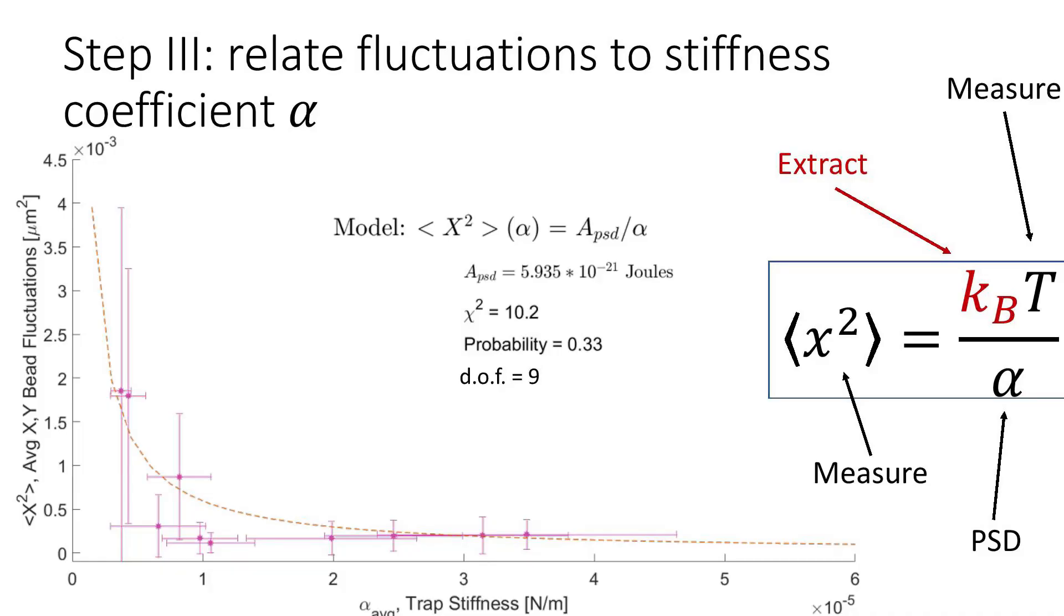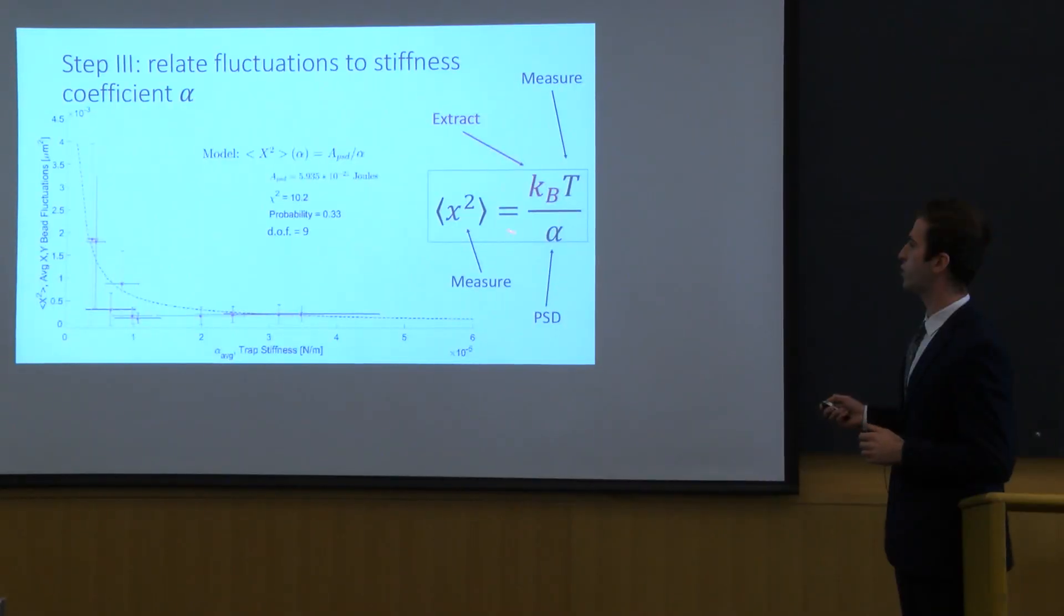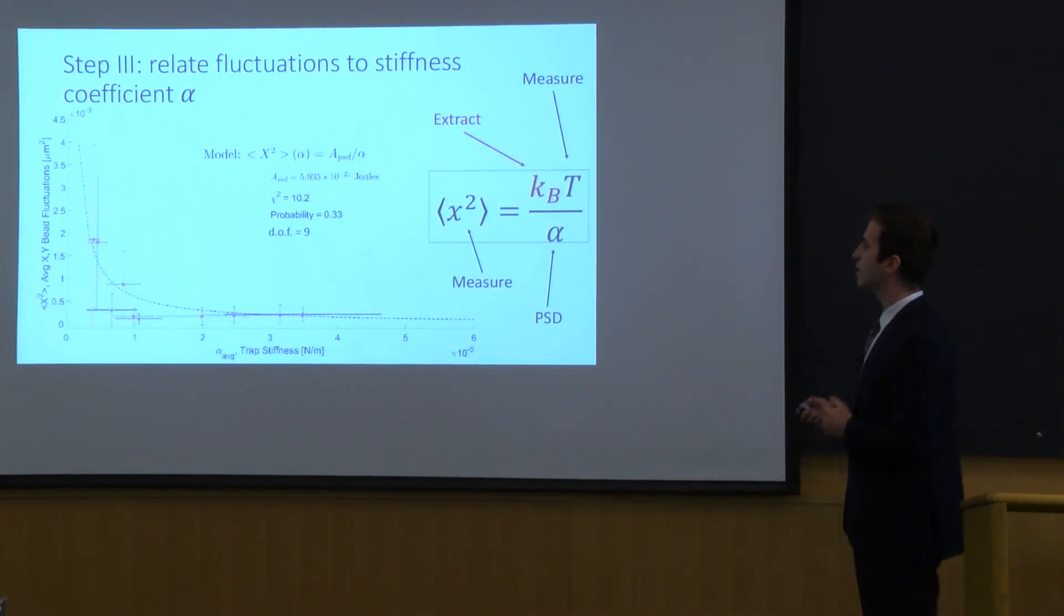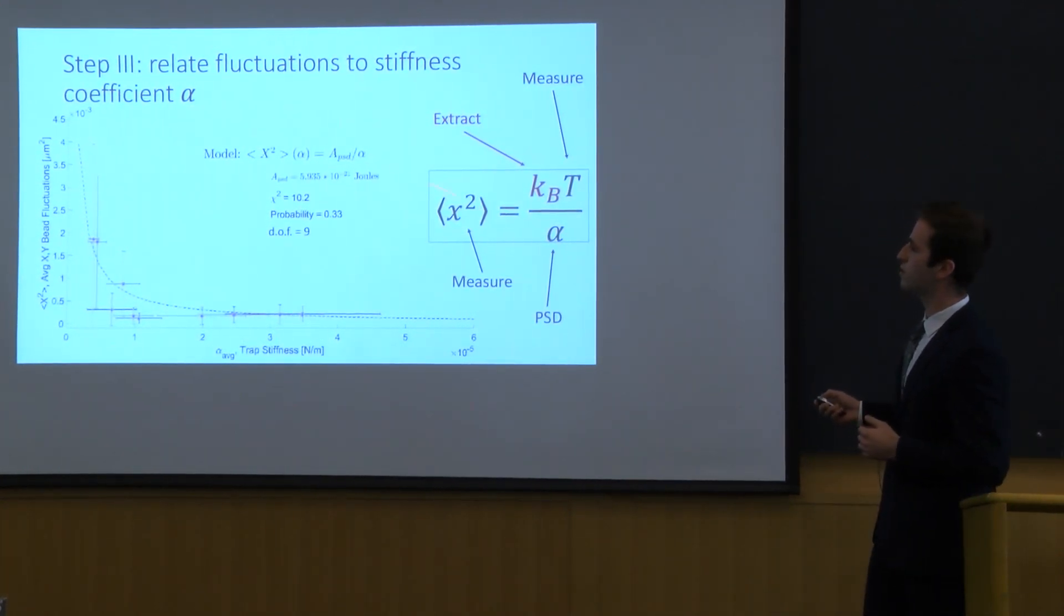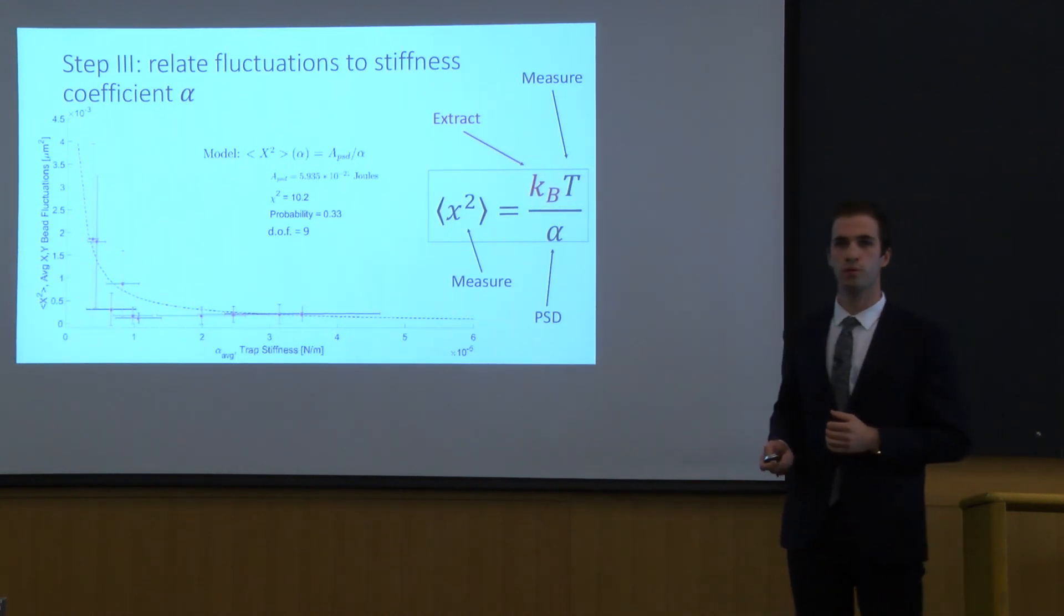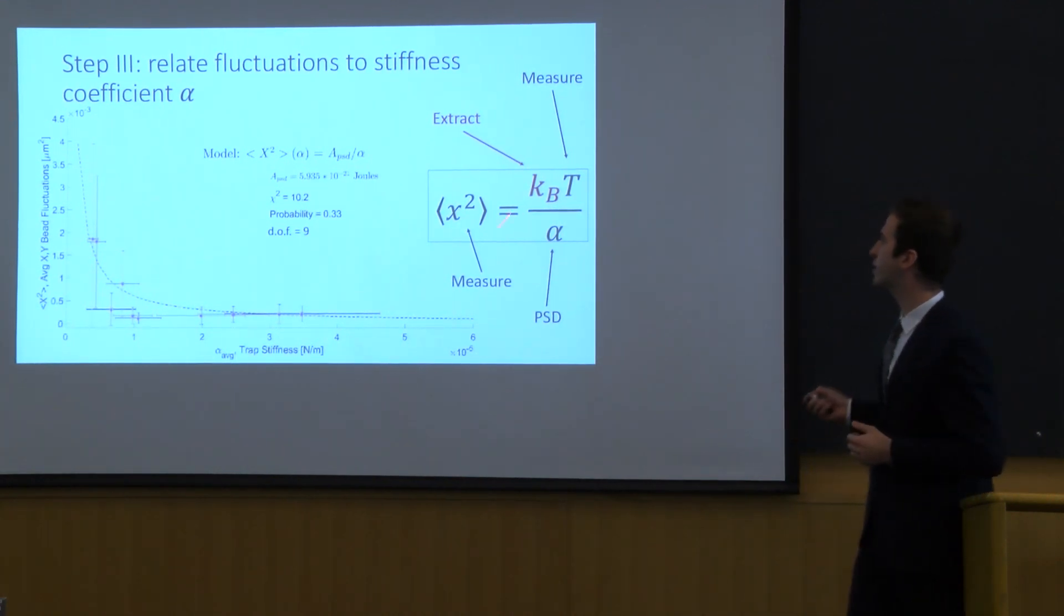Having all of these components we can put this into the big picture and the big picture is the extraction of KB over here. I showed you x squared the fluctuations, I showed you alpha we can measure the temperature T and then we can get KB. The essence of this measurement is to look at the inverse proportionality between fluctuations and the trap stiffness. Then we can make a fit with a reasonable chi-squared probability and from here we can extract KB.